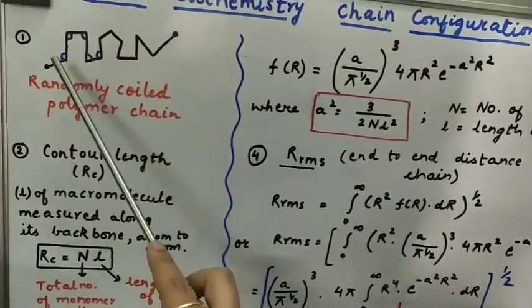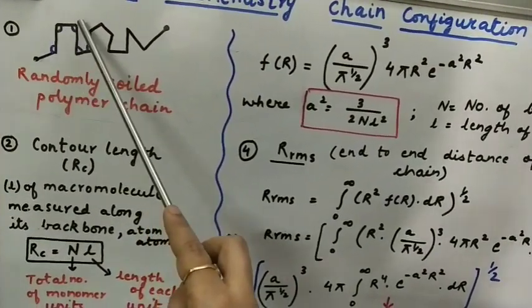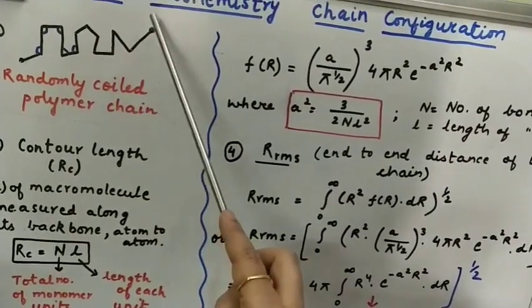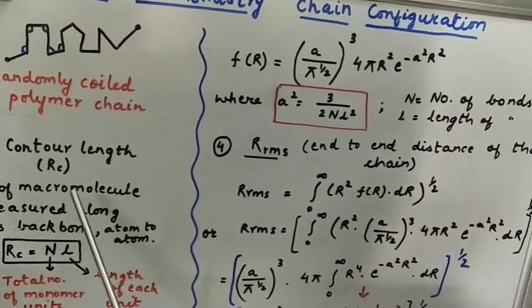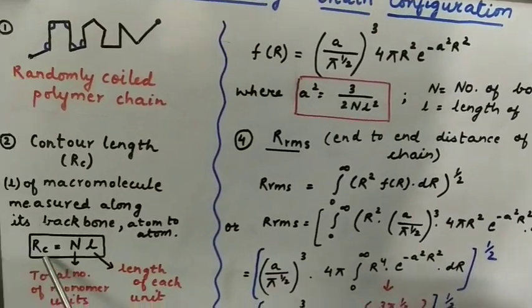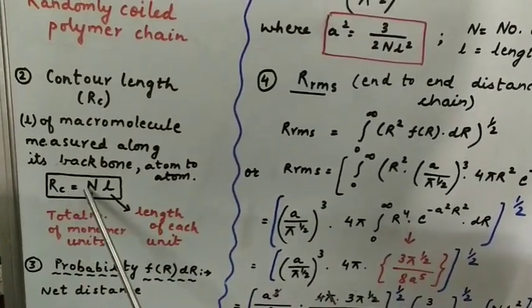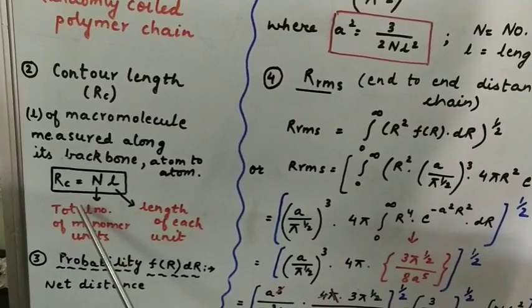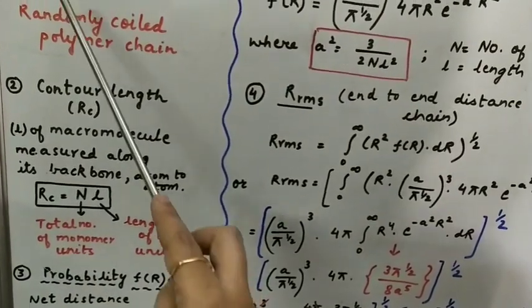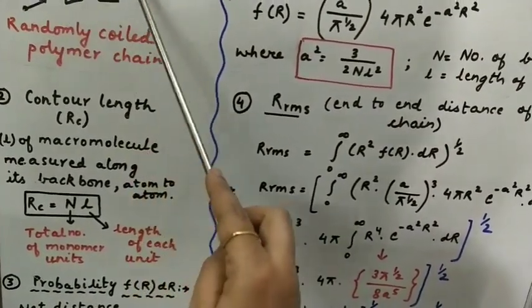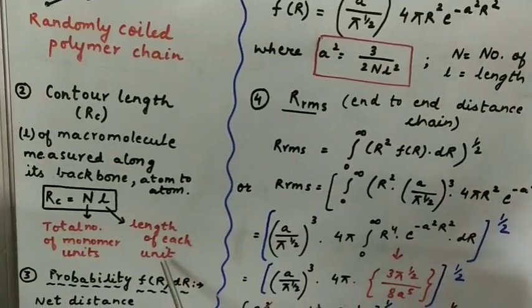Every atom. With every atom, we will going to be measuring the length. And this Rc is being represented by NL where N is total number of monomer unit. Like here you can count how many monomers are there and length of each unit.